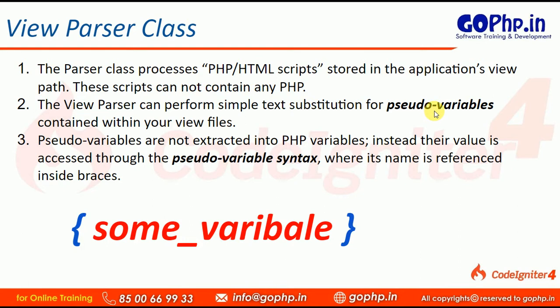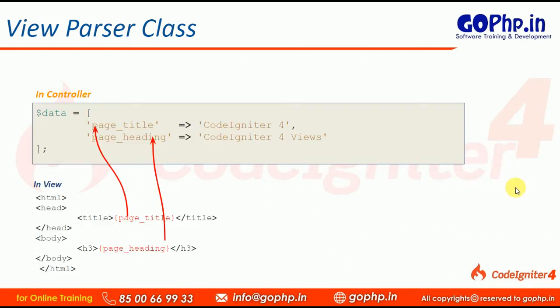The view parser can perform simple text substitution for a pseudo variable. In the previous session we saw how to pass data to a view in the form of an associative array. In this session we are going to do the same but using the View Parser class. Previously we loaded the view using the view method, but today we will use the parser class to load the view. In this parser class we have two important methods: setData() and render(). The setData() method assigns data to pseudo variables, and the render() method renders the template.